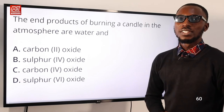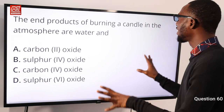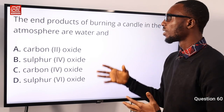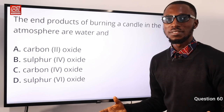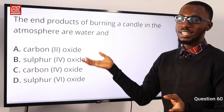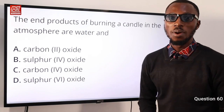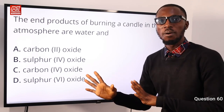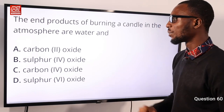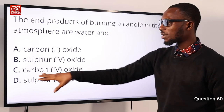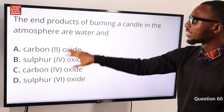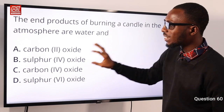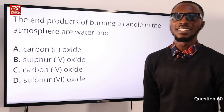Question 60: The end products of burning a candle in the atmosphere are water vapor and carbon dioxide. The reactants are candle wax and oxygen, producing water vapor and carbon dioxide. Option C is correct.